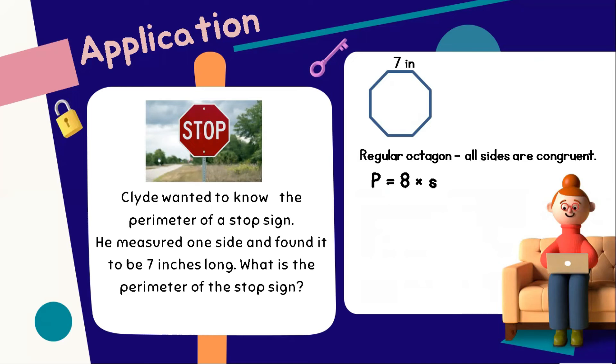Let's try to solve the perimeter of this regular octagon by having this formula: 8 times S, where S stands for the sides of this regular octagon. Let's substitute: 8 times 7 is equal to 56 inches. Therefore, the perimeter of the stop sign is 56 inches.